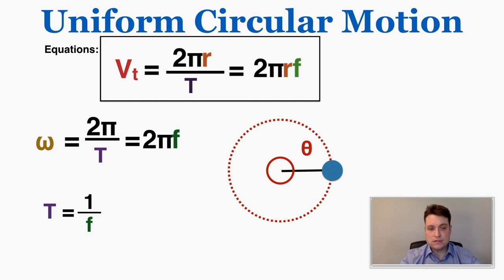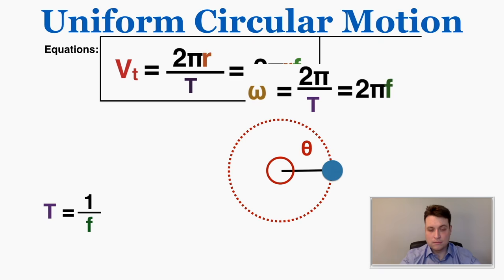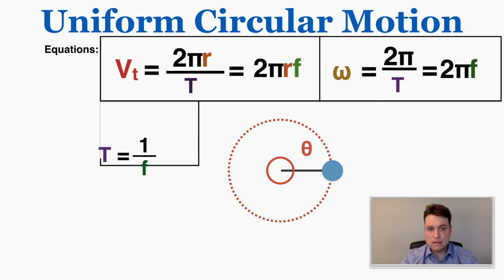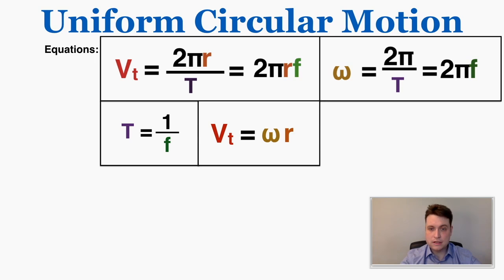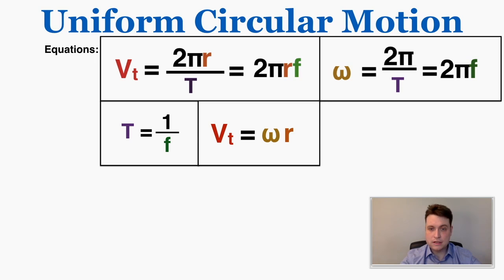You may notice that the tangential velocity is actually equal to the angular velocity multiplied by the radius — each equation for tangential velocity equals each equation for angular velocity multiplied by r. So the equation v = ωr holds true. The next equation gives the centripetal acceleration — how much the object is accelerating toward the center of its circular path.